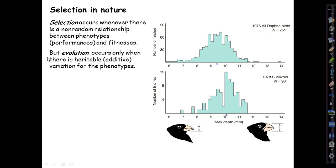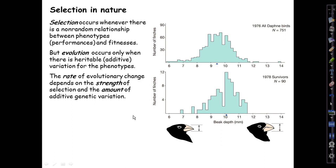That selection will cause evolution only if there is also heritable — that is to say, additive — variation for the phenotypes under selection. The rate of evolutionary change will then depend on the strength of the selection, that is, how non-random the relationship between phenotypes and fitnesses is, and on the amount of additive genetic variation.